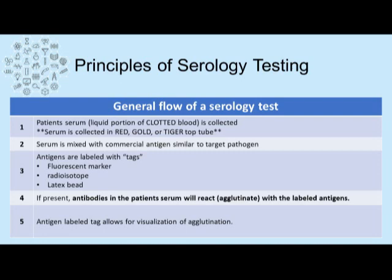Serology testing begins with collection in a red, gold, or tiger top tube. The sample is allowed to clot so no clotting factors remain, then spun down. The liquid portion of a clotted specimen is serum, which is then mixed with a commercial antigen similar to the target pathogen. That antigen is labeled with a fluorescent radioisotope or latex tag, and if the antibody is present in the patient's serum, the reaction will agglutinate and be visible because of that tag.